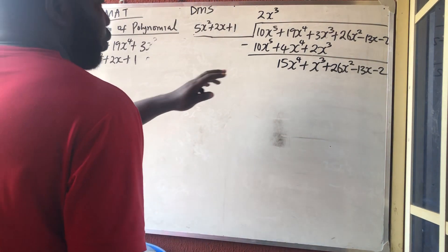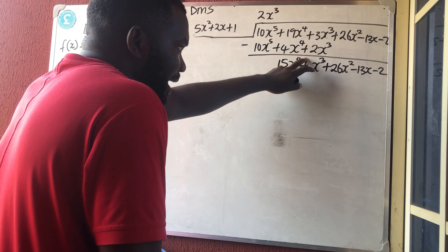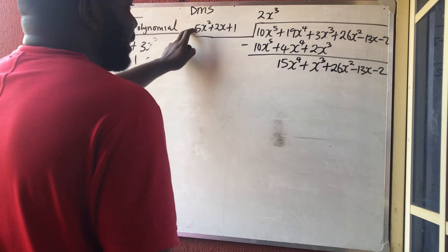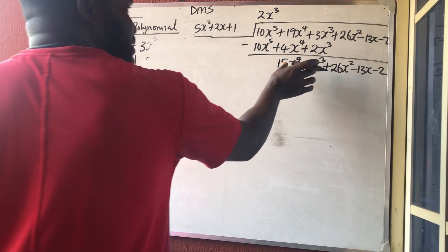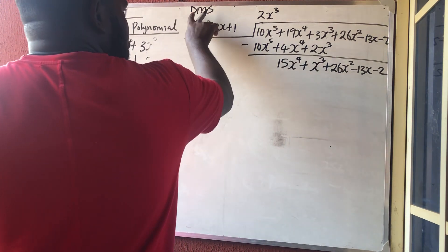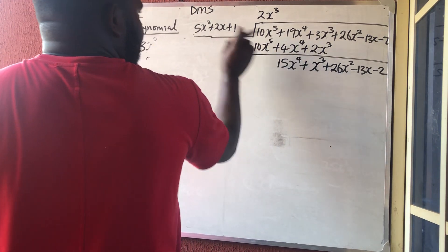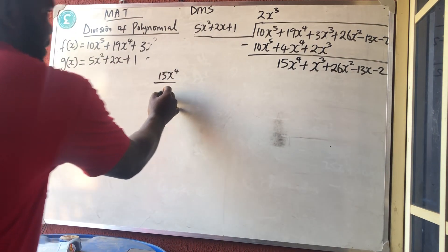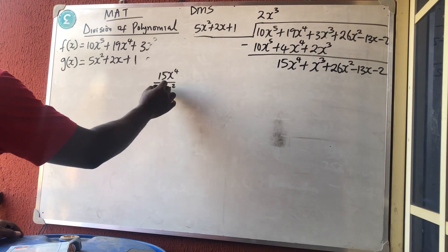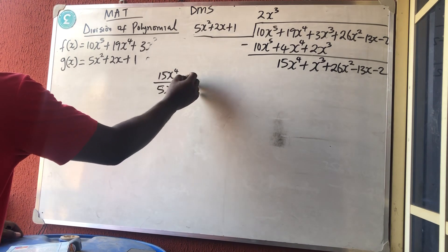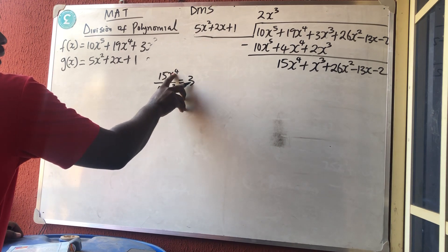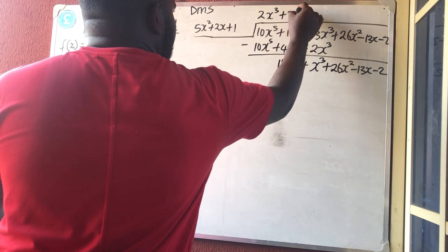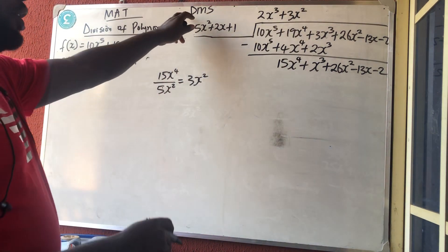Looking at the remainder, x⁴ is the highest power here but x² is the highest power in the divisor — this is still higher, so we cannot stop. We only stop when the remainder's degree is less than the divisor. So we continue DMS again. Division: 15x⁴ divided by 5x² — 15÷5 = 3, remove x² from x⁴ gives x². So plus 3x² is added to the quotient.